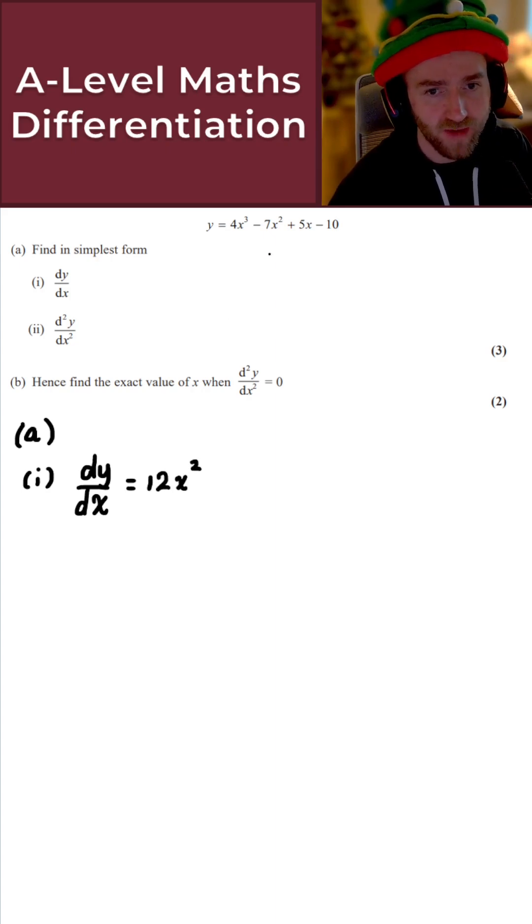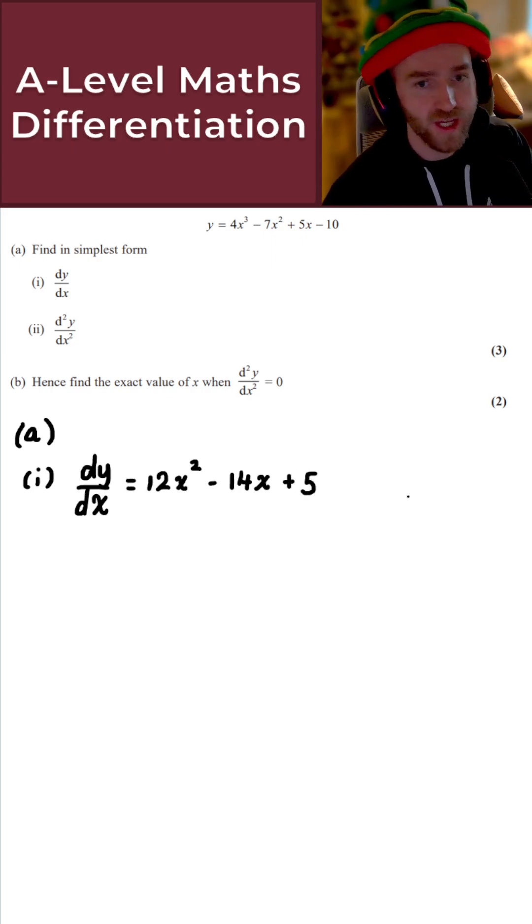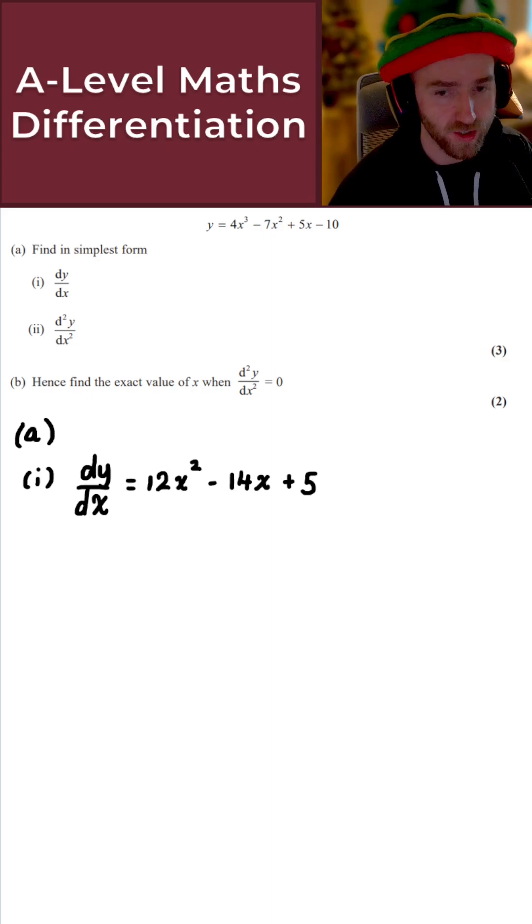Minus 7x², so minus 7 times 2 is minus 14, reduce the power by 1, so I get minus 14x there. The plus 5x just becomes plus 5, and then the minus 10 here, that's a constant, and if you differentiate a constant, that's just 0. So this here is simply the solution to part 1.